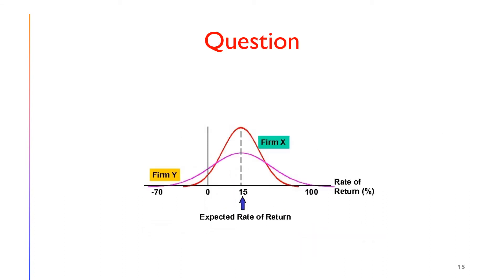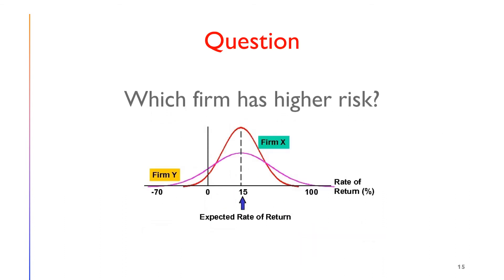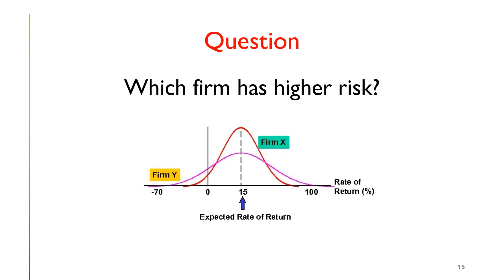Let me ask you a question. Which firm has higher risk? Why? The answer is Firm Y. This is because Firm Y has a wider dispersion from the expected return of 15%. The higher the standard deviation, the higher the risk.